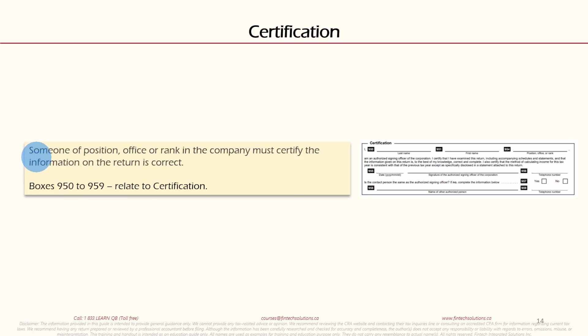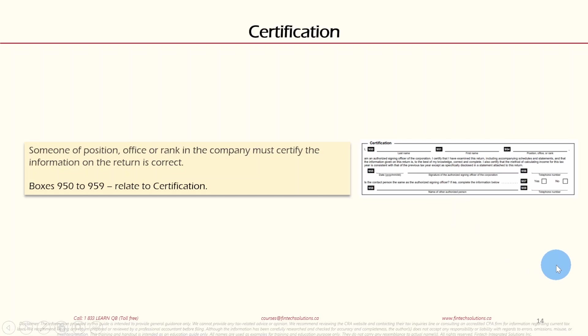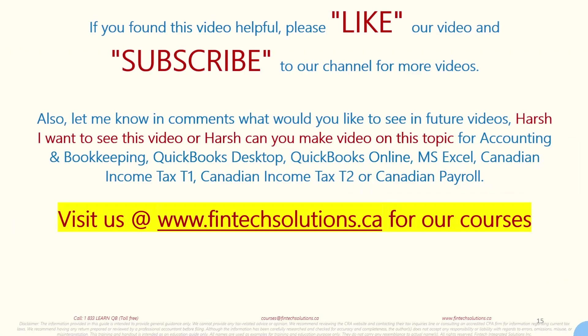Section 12, the last section, is Certification. Someone of officer rank in the company must certify that the information in the return is correct. Boxes 950 to 959 relate to certification. The first name, last name, position, and signature of the signing officer of the corporation go here, and that completes all 12 sections of the T2 Corporation Income Tax Return form.